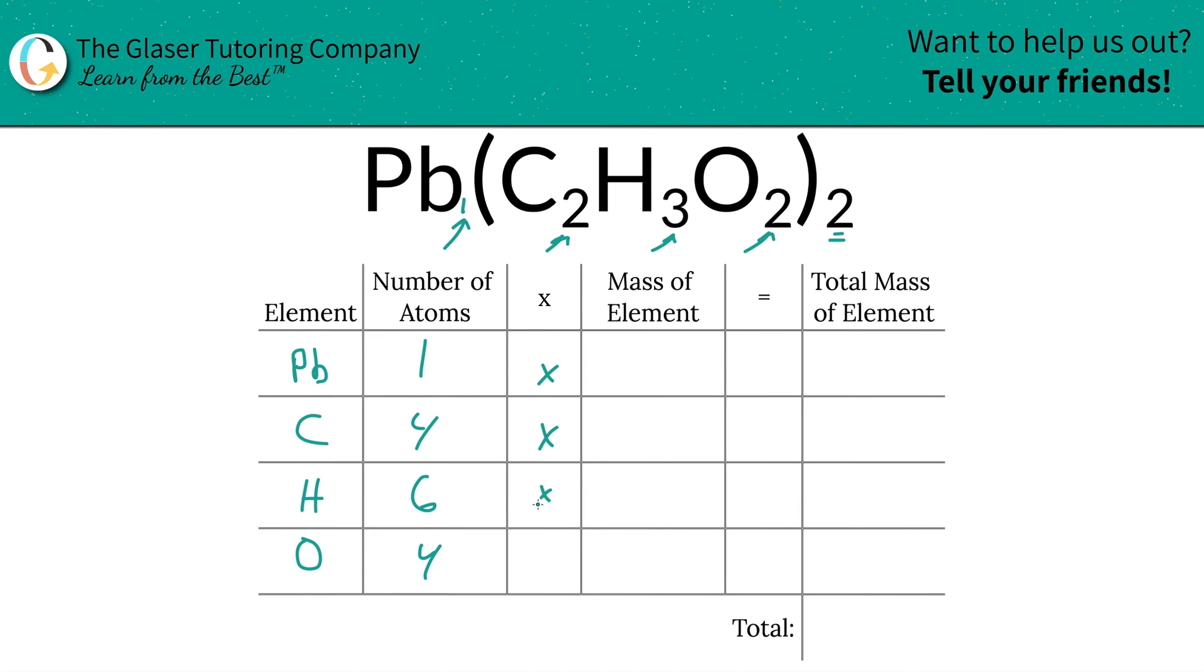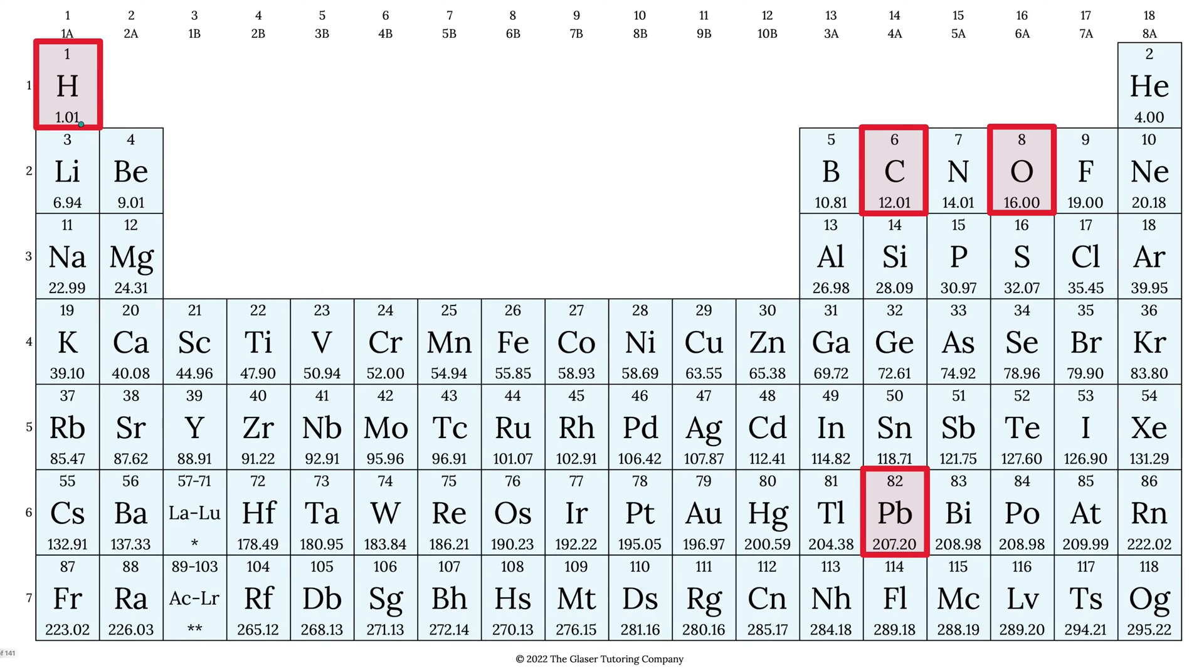So then we're going to take those number of atoms now, and we're going to multiply it by the mass of each element. You need a periodic table for this. So hydrogen is 1.01, carbon is 12.01, oxygen is 16, and lead is going to be 207.2.